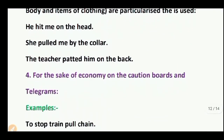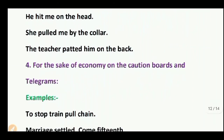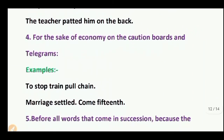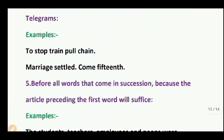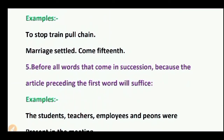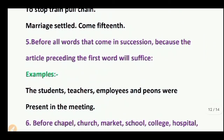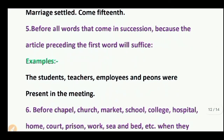Omission point 4: For the sake of economy on caution, road signs and notices omit the article. Examples: To stop train, pull chain. Marriage settle. Come 15th. Omission point 5: Before all words that come in succession, the article preceding the first word is sufficient. Example: The students, teachers, employees and peers were present in the meeting — 'the' is placed before 'students' only.